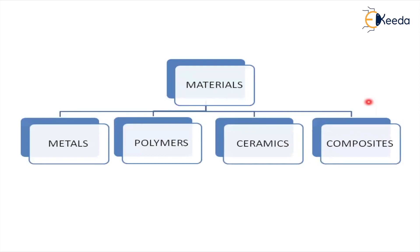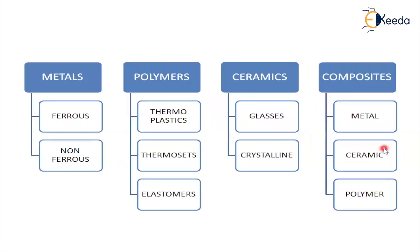In material science engineering, the materials are classified into the following categories: metals, polymers, ceramics, and composites. There are sub-classifications where these categories are also available. Follow this diagram to understand the sub-classification of the materials.